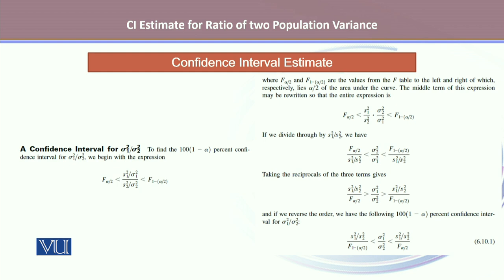So confidence interval estimate for sigma 1 square divided by sigma 2 square, which is a ratio of two variances, can be given by solving this expression where the ratio of S1 square over sigma 1 square divided by S2 square over sigma 2 square is within the limits F alpha by 2 and F 1 minus alpha by 2.